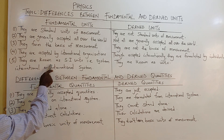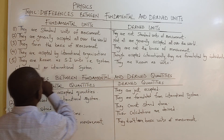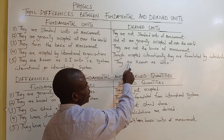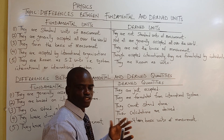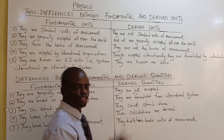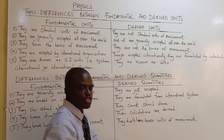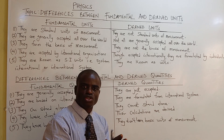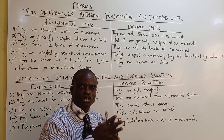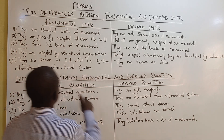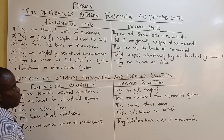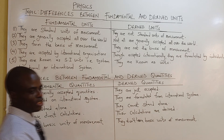Fundamental units are known as SI units — that is, Système International, or International System. Derived units are simply known as units, because they involve combinations of fundamental units. For example, meter cubed is just known as a unit — it is not an SI unit or an International System unit. Similarly, joules per second is not an SI unit; it is just known as a unit.